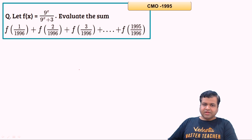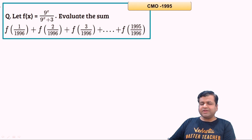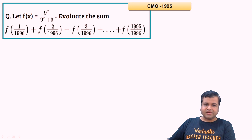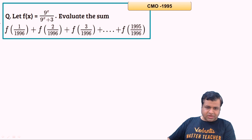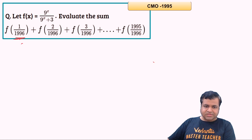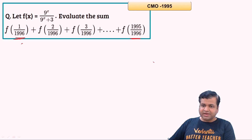Now this is a good question. The function f(x) = 9^x/(9^x + 3). In fact, this is a standard question in JEE preparation in India, but it was a question from the 1995 CMO exam. In this type of question, we observe that 1/1996 + 1995/1996 = 1, so the arguments pair up to sum to 1.